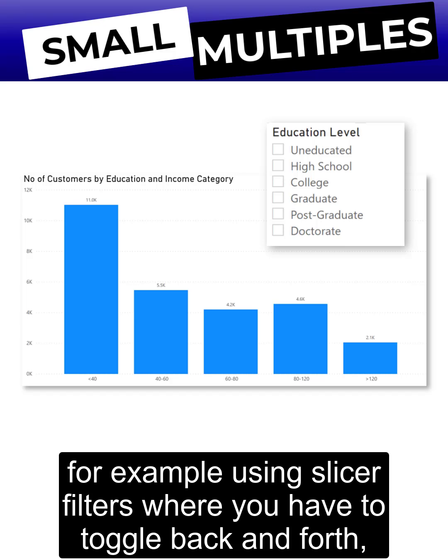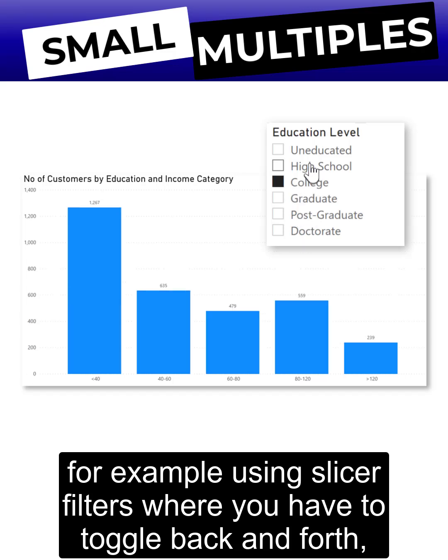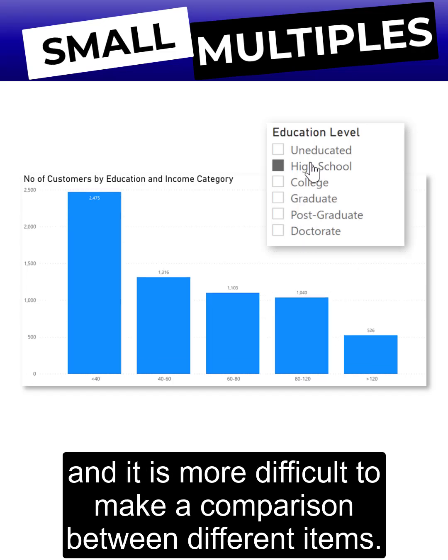For example, using slicer filters where you have to toggle back and forth makes it more difficult to make a comparison between different items.